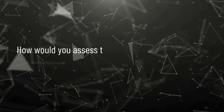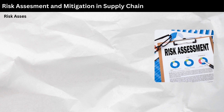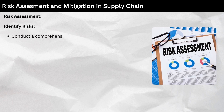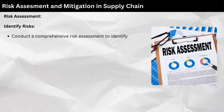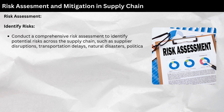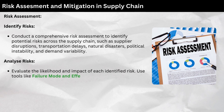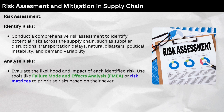Question 5: How would you assess the potential risks in a supply chain and develop mitigation strategies? Risk assessment — Identify risks: Conduct a comprehensive risk assessment to identify potential risks across the supply chain, such as supplier disruptions, transportation delays, natural disasters, political instability, and demand variability. Analyze risks: Evaluate the likelihood and impact of each identified risk. Use tools like Failure Mode and Effects Analysis (FMEA) or risk matrices to prioritize risks based on their severity and probability.